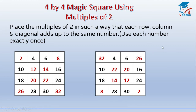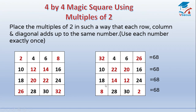So let us add up. Row 1: 32 plus 4 plus 6 plus 26 is 68. Row 2: 10 plus 22 plus 20 plus 16 is 68. Row 3: 18 plus 14 plus 12 plus 24 is 68. Row 4: 8 plus 28 plus 30 plus 2 is 68. Let us see columns — 32 plus 10 plus 18 plus 8 is equal to 68.